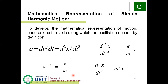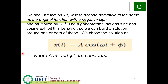Mathematical representation of simple harmonic motion: choose x as the axis along which the oscillation occurs. By definition, a = dv/dt = d²x/dt². So d²x/dt² = −(k/m)x. Setting ω² = k/m, we get d²x/dt² = −ω²x. We seek a function x(t) whose second derivative equals the original function multiplied by −ω². The trigonometric functions sine and cosine exhibit this behavior, so we choose the solution x(t) = A cos(ωt + φ), where A is the amplitude, ω is the angular velocity, and φ is a constant.